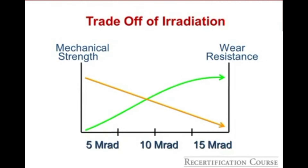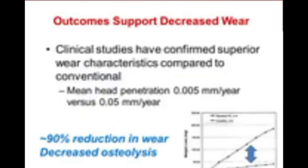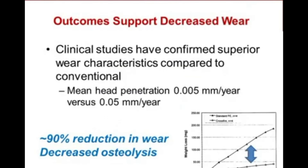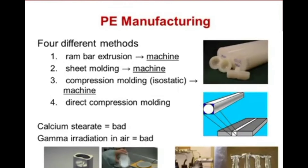There is a trade-off to irradiation: as the dose goes up and cross-linking increases, wear resistance improves but mechanical strength decreases. Clinical outcomes clearly support decreased wear in vivo with cross-linked polyethylene. Multiple studies have confirmed superior wear characteristics of highly cross-linked poly compared to conventional polyethylene — approximately a 90% reduction in wear and dramatically reduced rates of osteolysis.